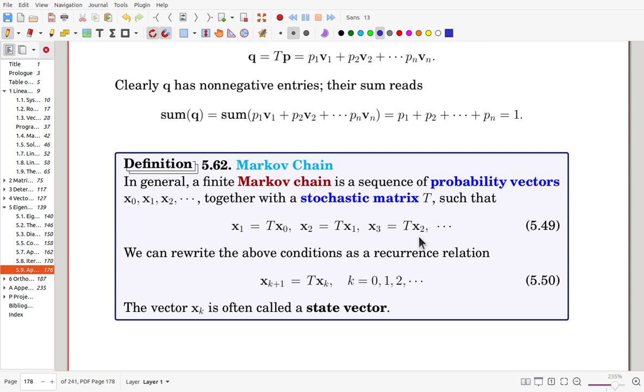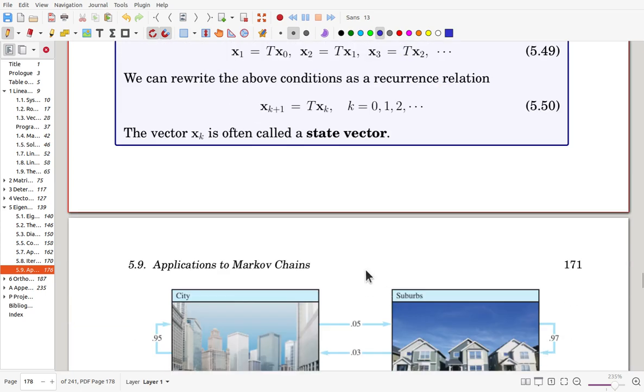We can rewrite the above conditions as a recurrence relation, xk+1 as T times xk. The vector xk is often called a state vector. It is a collection of states.